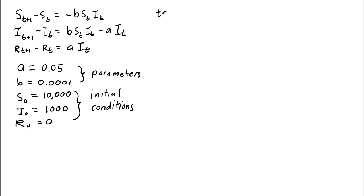If T is 0, which is what we care about for the first case in order to calculate the values at time 1 from time 0, then we can write B, S0, I0, this is the rate in which, or the number of individuals that get infected.